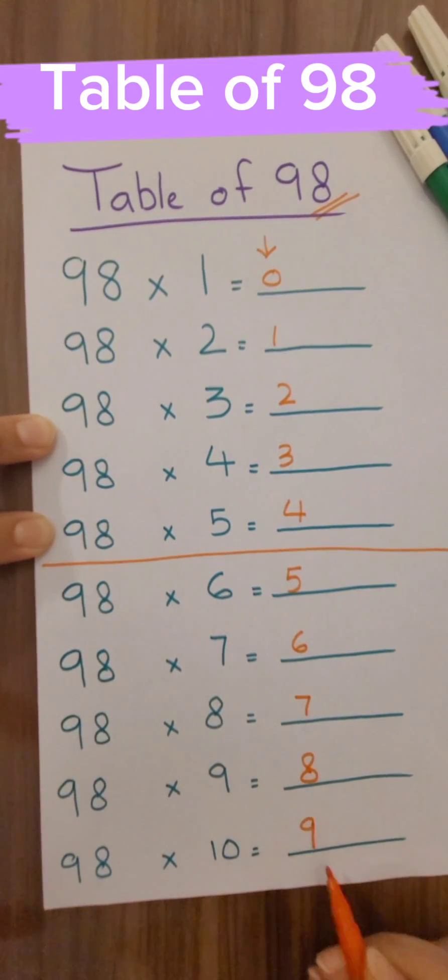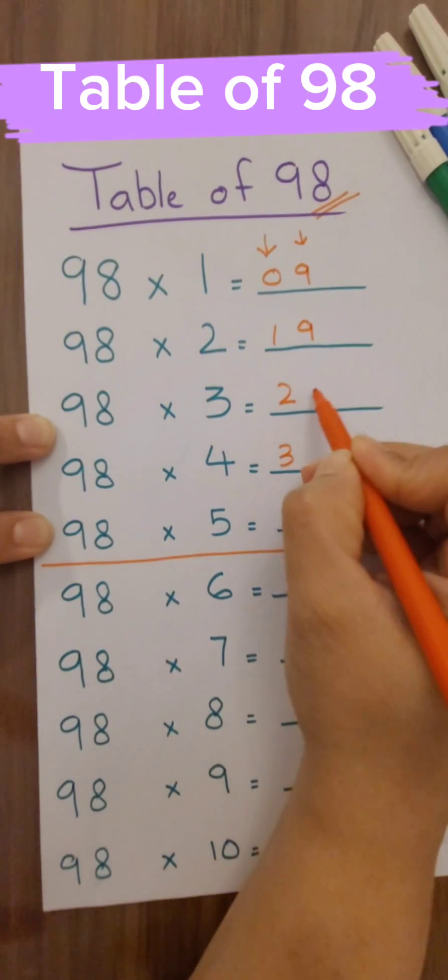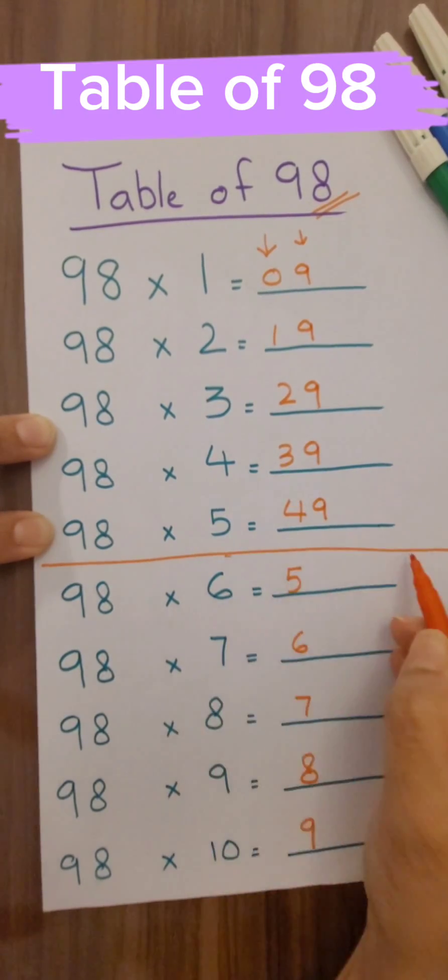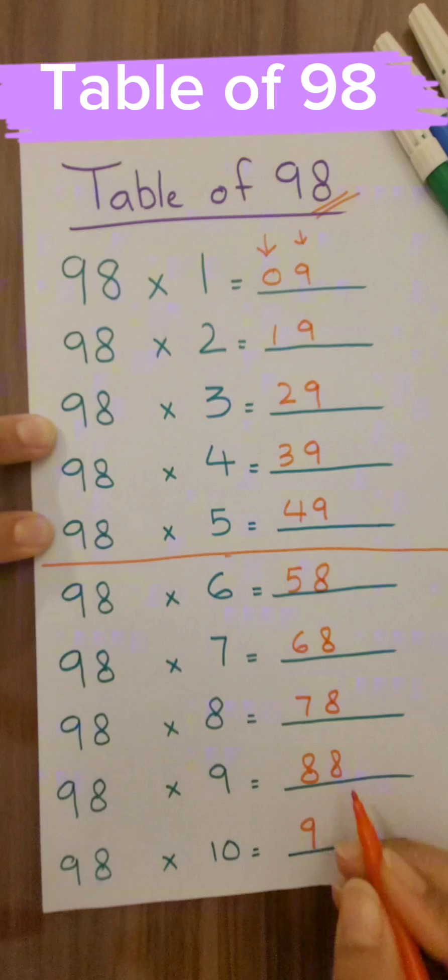9. Now again, start from the top: 9, 9, 9, 9, 9, 9. Now write down 8, 8, 8, 8, 8.